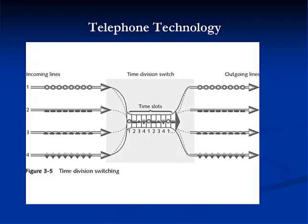Then, in 1976, a new type of switch was placed into service called the space division switch. Space division switching is a transmission technique in which samples from multiple incoming lines are digitized, then each sample is issued to the same circuit in a predetermined sequence before finally being transmitted to the correct outbound line.